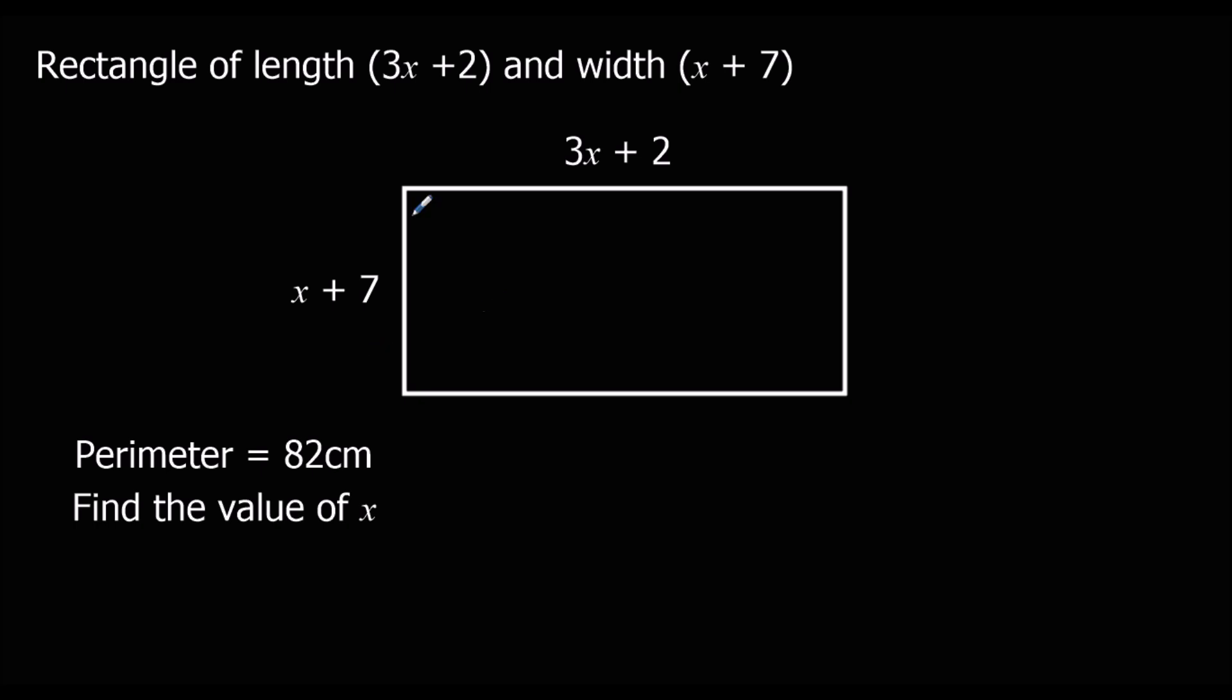Perimeter is all of the sides added together. We've got x plus 7 here, so this must be x plus 7 here as well. We've got 3x plus 2, so this must also be 3x plus 2. We're going to add all these up and put it equal to 82, because that's the perimeter.